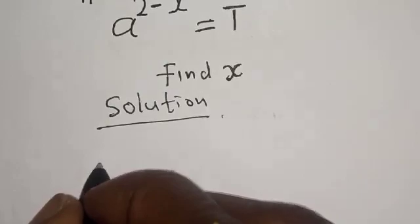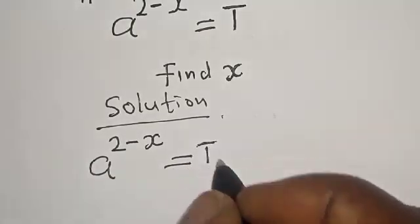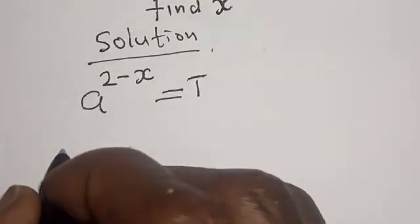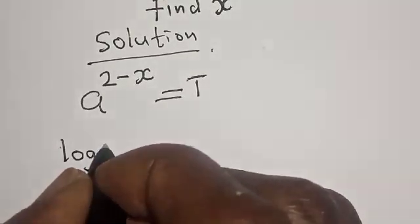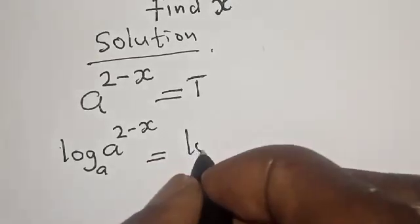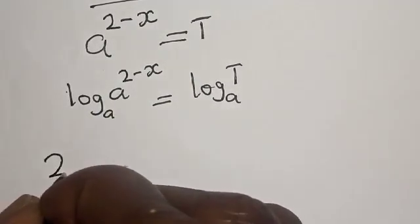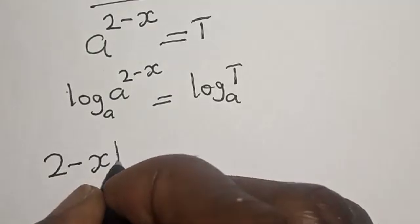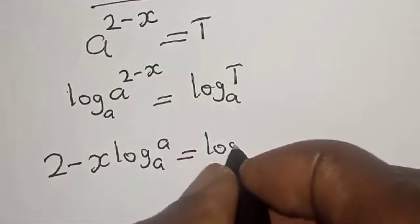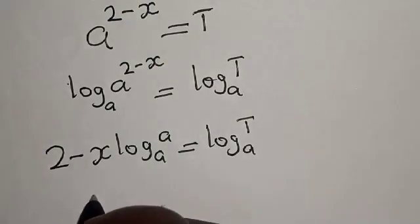We have the given equation: a raised to power 2 minus s is equal to t. Let's take the log of both sides. We have log of a raised to power 2 minus s, base a, is equal to log t base a. This is the same as: 2 minus s times log a base a is equal to log t base a. Now, log a base a is equal to 1.